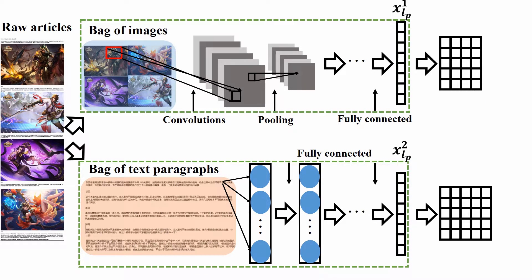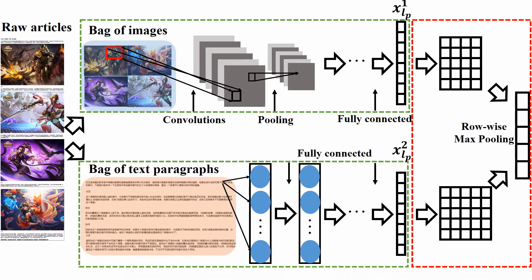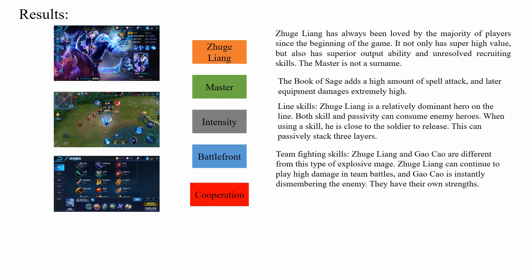Based on optimal transport theory, M3DN adopts optimal transport distance to measure the quality of prediction, which provides a more meaningful measure in multi-label tasks by capturing the geometric information of the underlying label space. Consequently, M3DN could automatically learn the predictors for different modalities and the latent shared ground metric. As a result, we can classify the complex object accurately with M3DN.